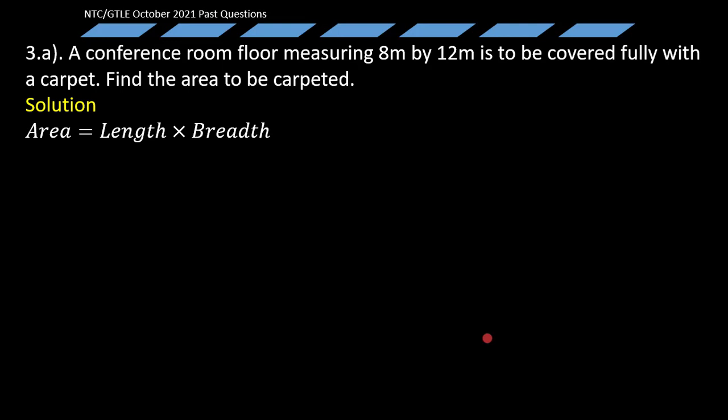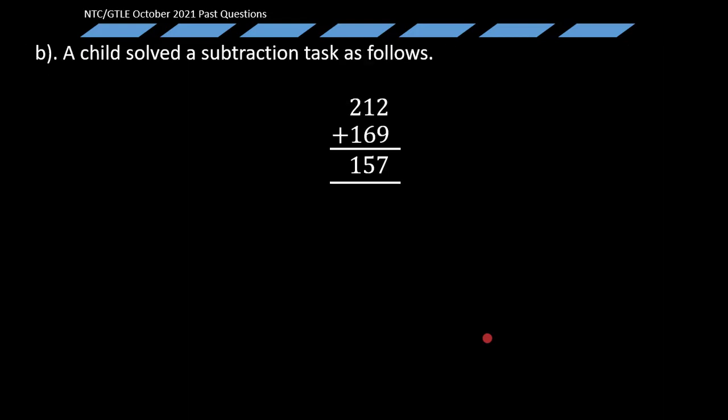Now that will simply imply that we have 12 meters times 8 meters. When you multiply 12 meters by 8 meters, you simply have the answer 96 meters squared. So we can therefore conclude that the area to be carpeted is simply equal to 96 meters squared.